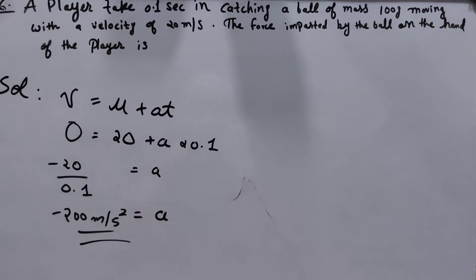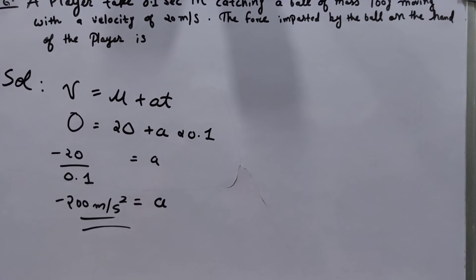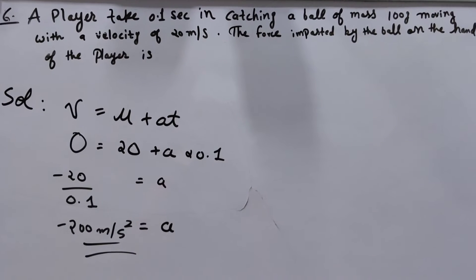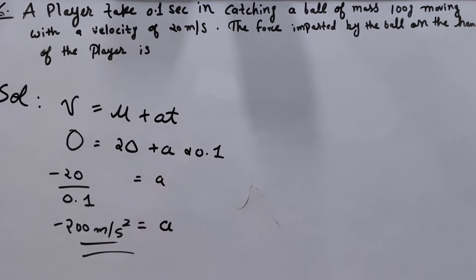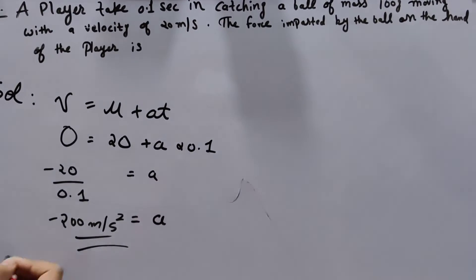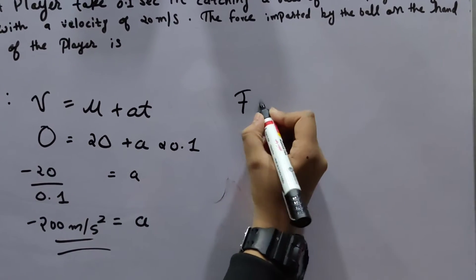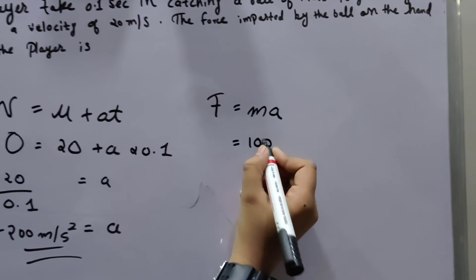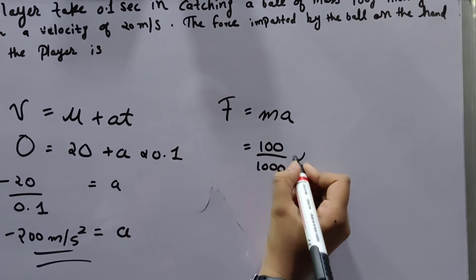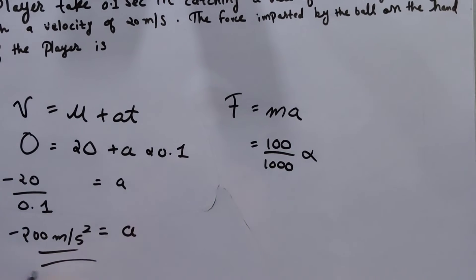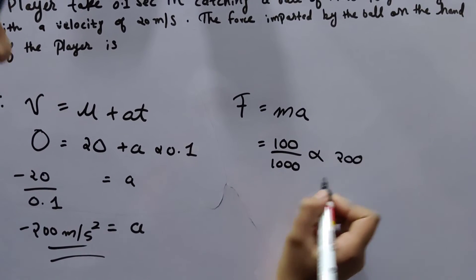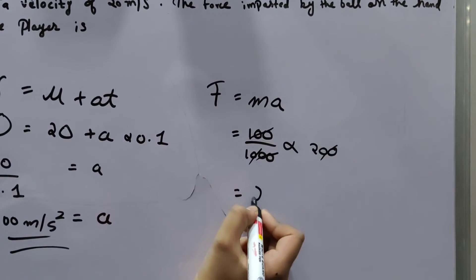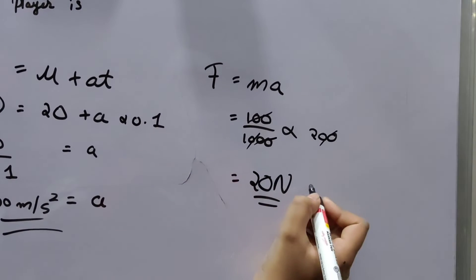If you are thinking why the acceleration is negative, it's because the ball had an earlier velocity of 20 meters per second but it decreased to 0, so the acceleration is negative because the ball is decelerating. But while calculating force, which is mass into acceleration, we neglect the negative sign. Mass is 100 grams which is 0.1 kg, into acceleration 200, giving us 20 Newtons. The correct option is B.